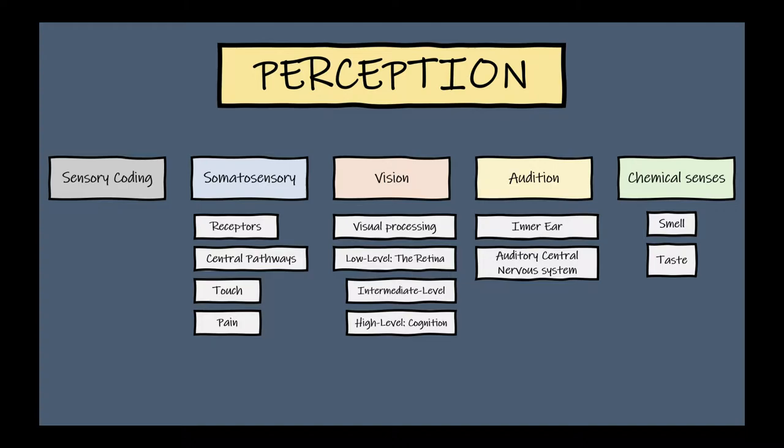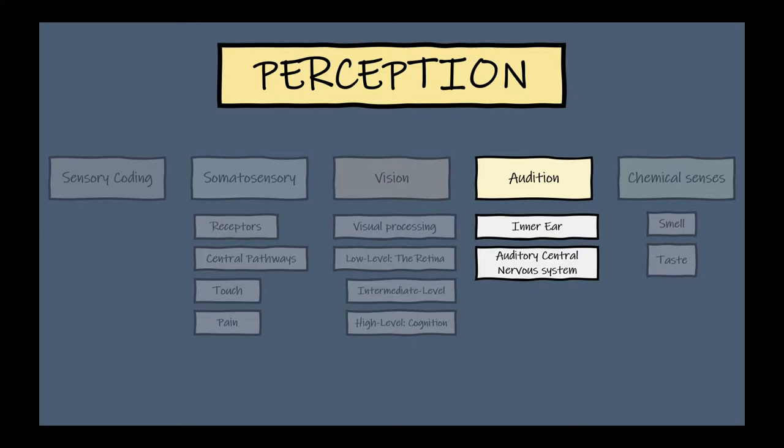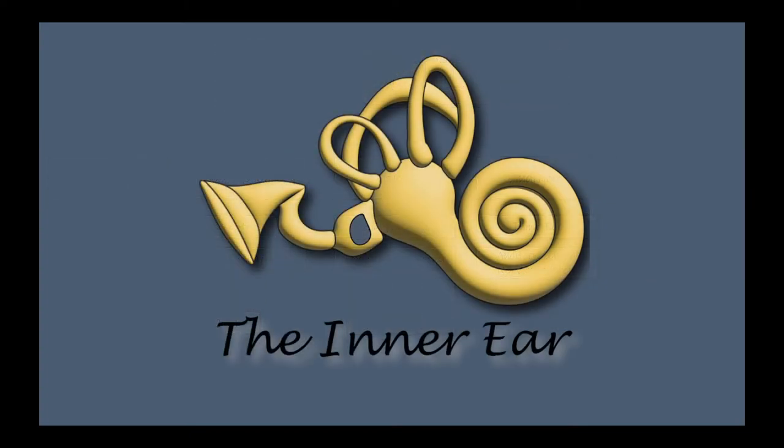In this series, I will explain about one of the perceptions, the audition. The audition part is divided into two chapters, the inner ear and auditory central nerve system.